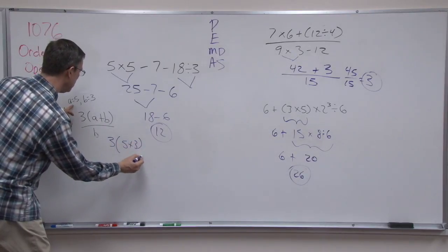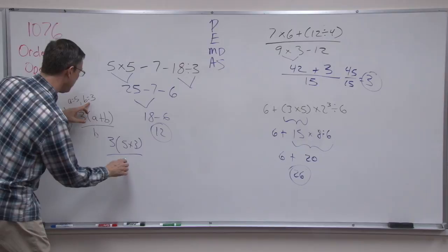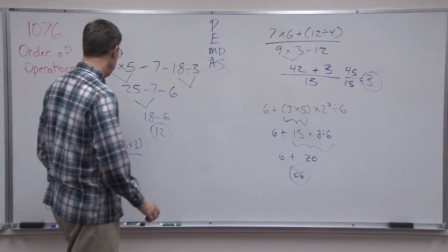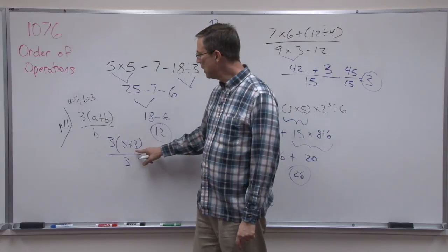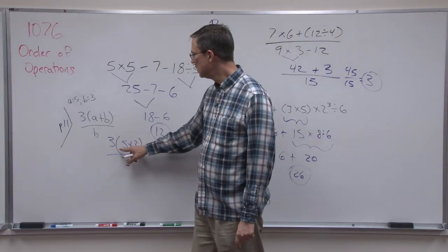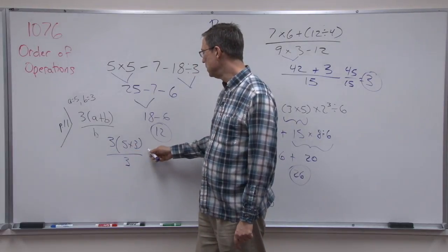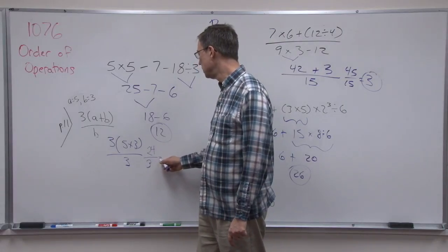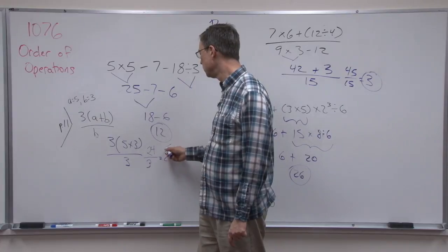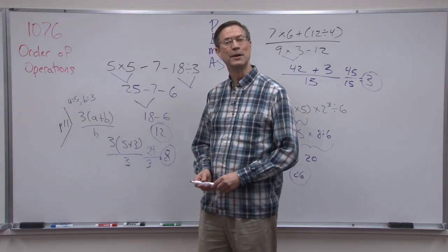So this becomes 3, and I'm going to plug in 5 here, plus 3, over, and dividing by 3. So 5 plus 3 is 8, and then I can do the 8 times 3 is 24, divide by 3, and so the answer comes out to be 8.